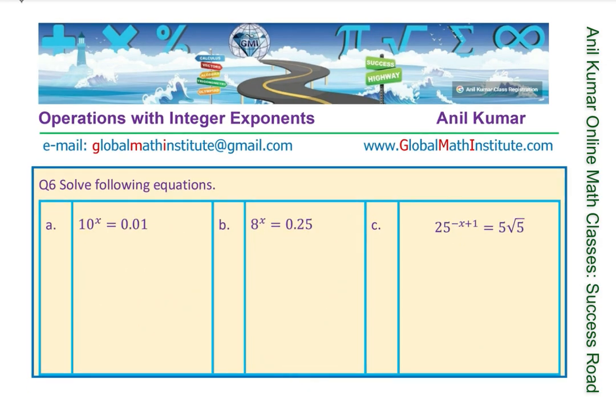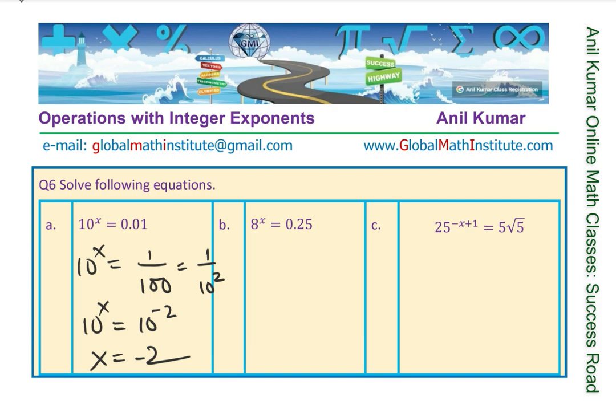Here are three more questions with decimal values. First: 10 to the power of x equals 0.01. Now 0.01 is 1 over 100, which is 1 over 10 squared. So we can write 10 to the power of x equals 10 to the power of minus 2, therefore x equals minus 2.